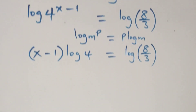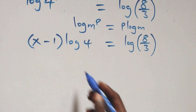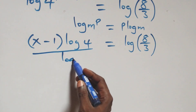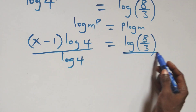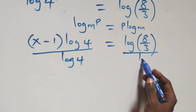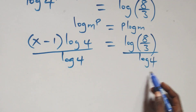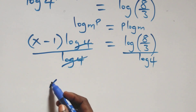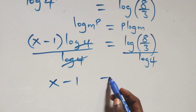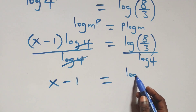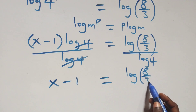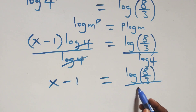The next step: we divide both sides by log 4. Dividing both sides by log 4, the log 4 terms cancel, leaving x minus one equals log of 8 over 3, divided by log 4.